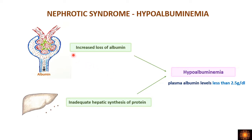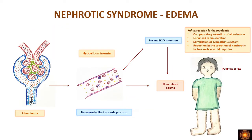Along with increased loss of albumin, the nephrotic liver is unable to synthesize sufficient protein to compensate. Combined with inadequate hepatic synthesis, this causes hypoalbuminemia — plasma albumin levels in these patients will be less than 2.5 grams per deciliter.